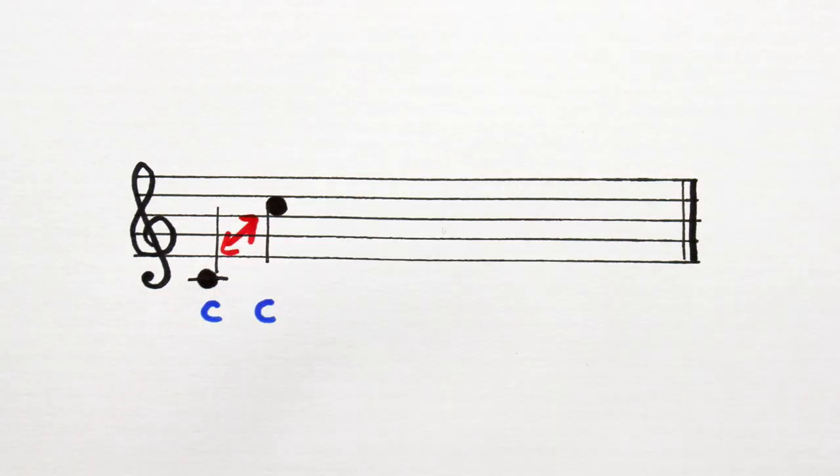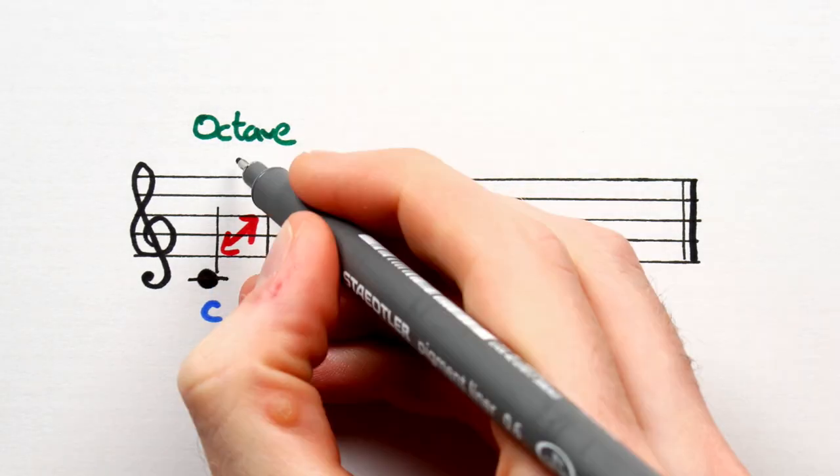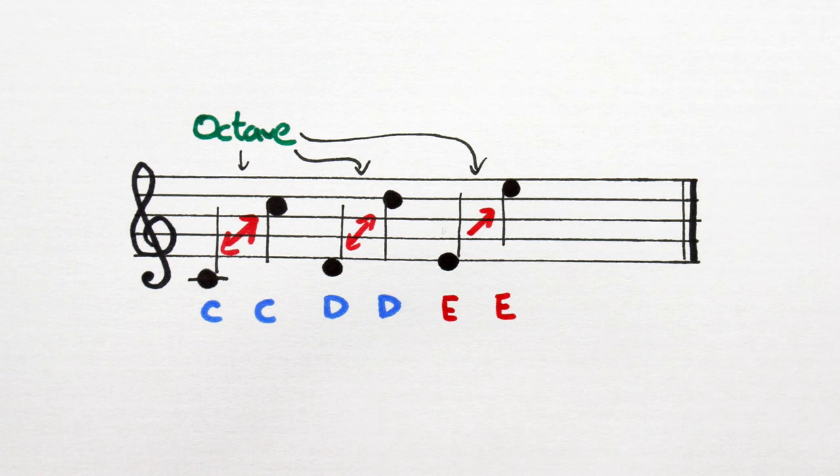So, C to C is an octave. D to D is an octave. E to E is an octave. And so on.